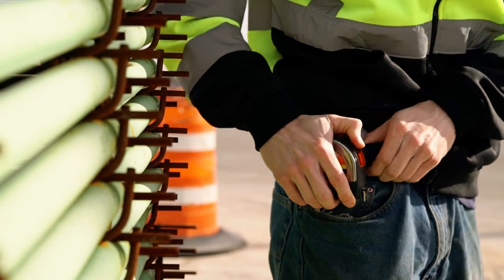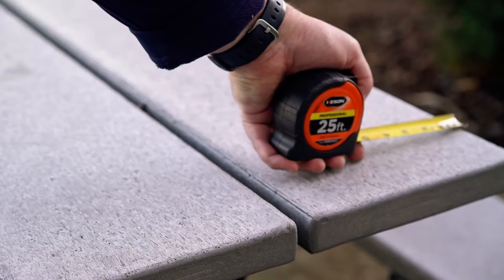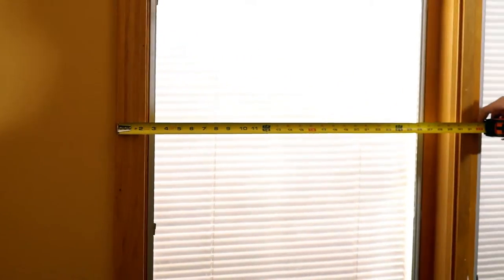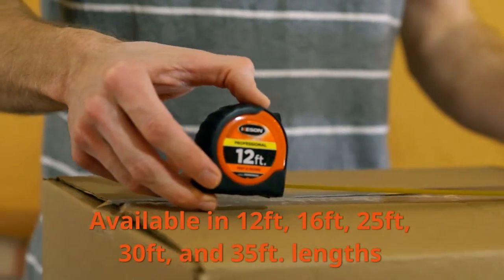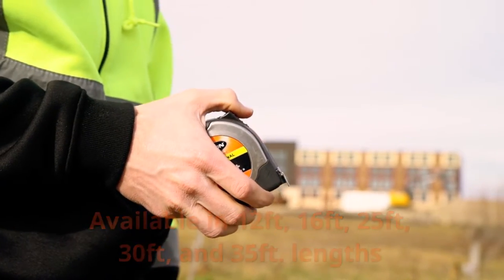The Professional Series is available in stainless steel or high impact, high visibility Kesson Orange ABS housing. We offer this tape in 12 feet, 16 feet, 25 feet, 30 feet, and 35 feet lengths.